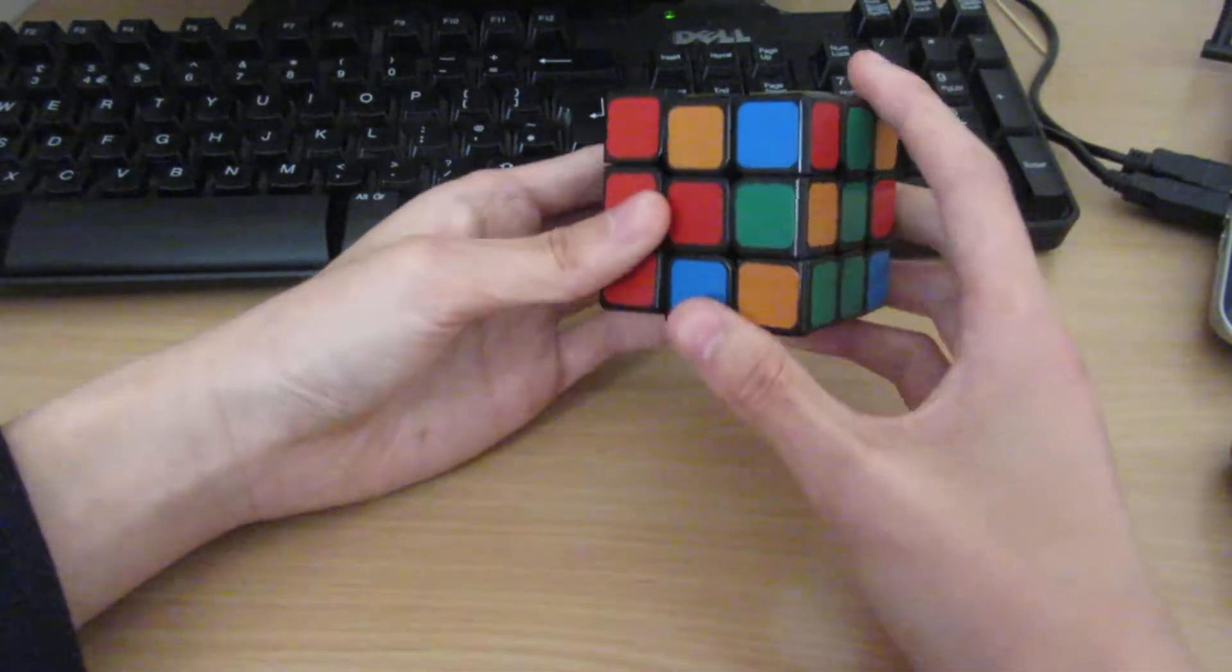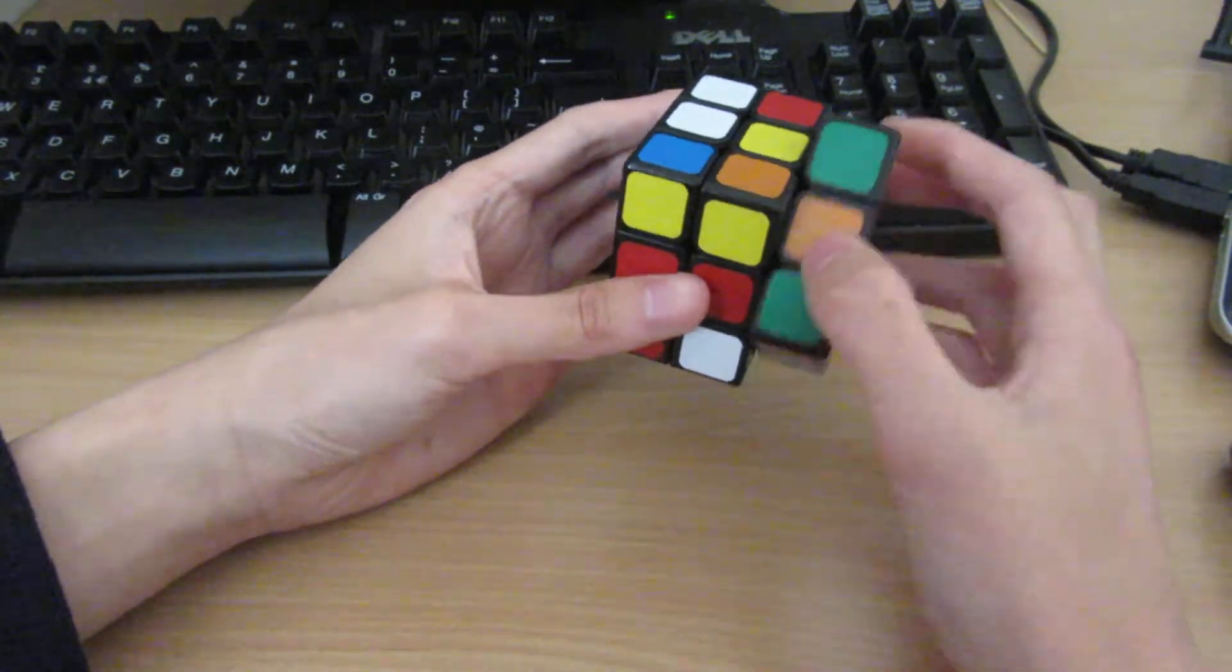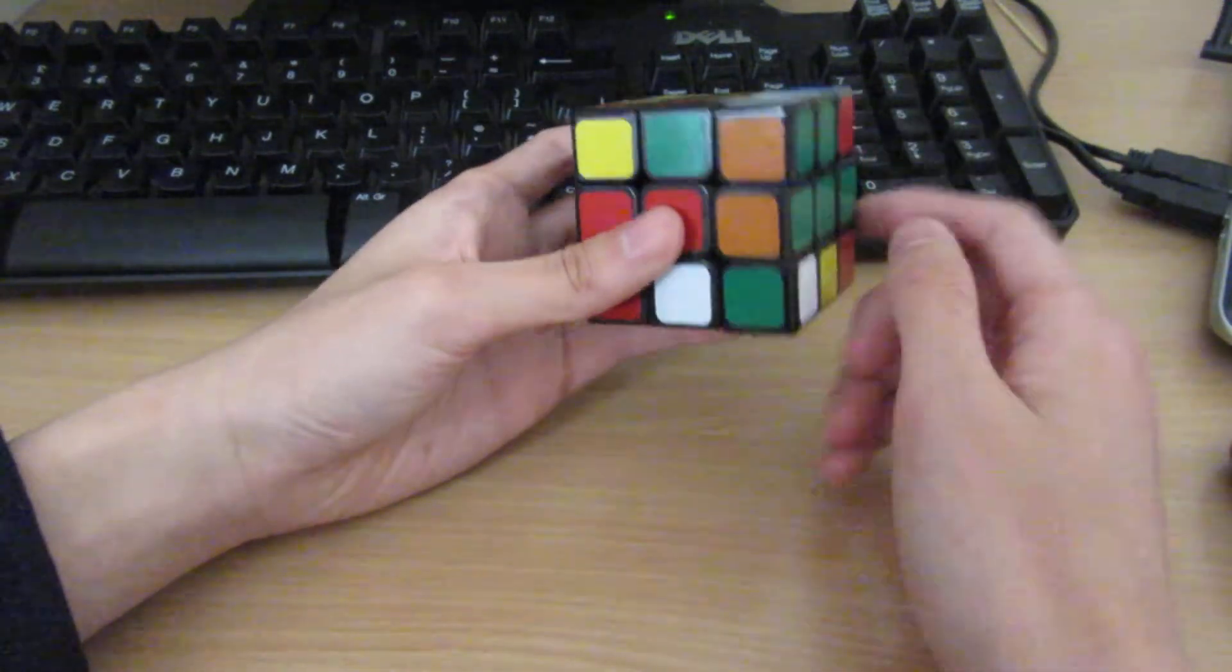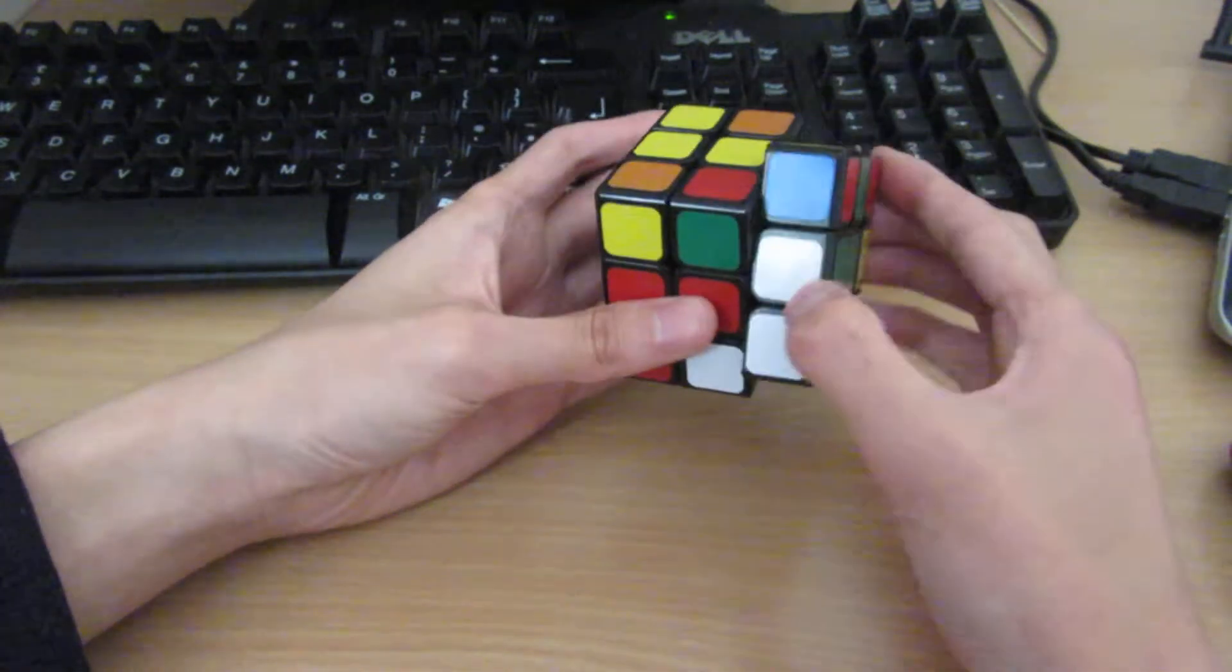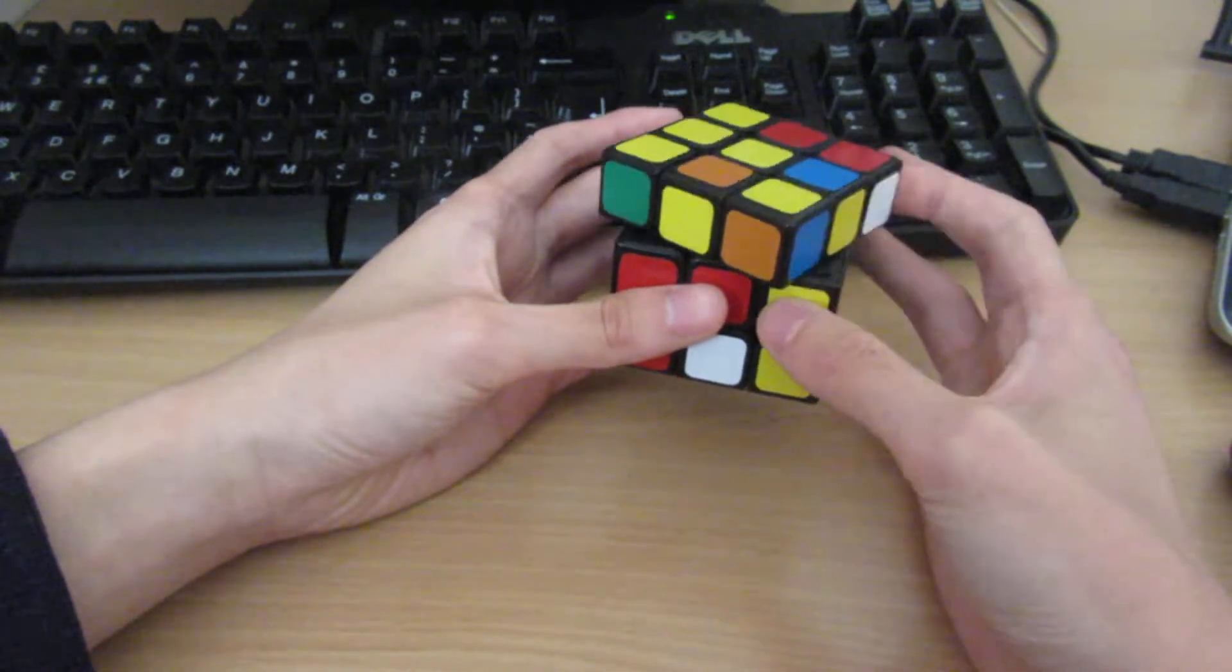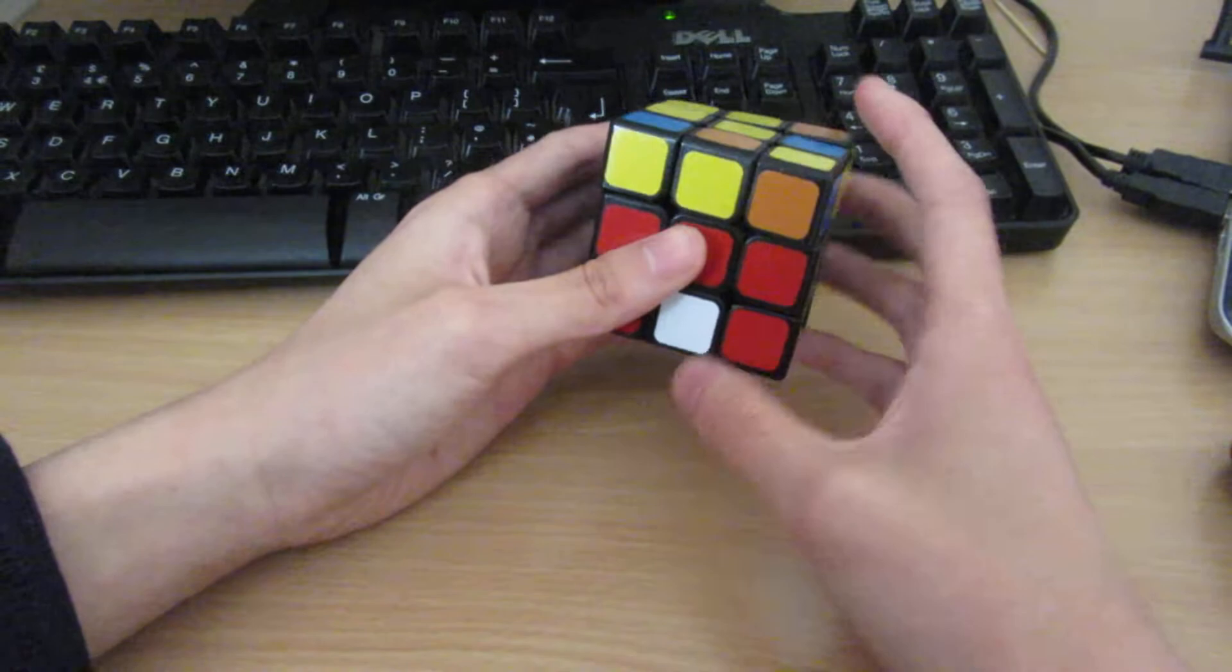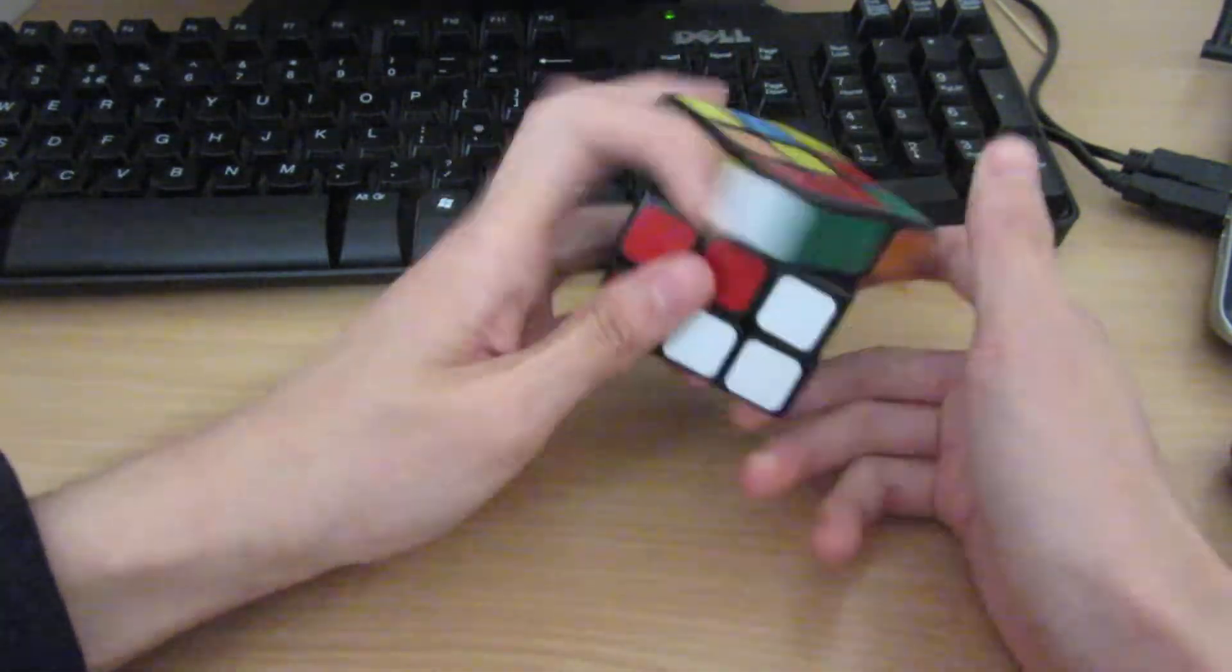This one, I just first orient it by doing this, and then join it up. These two will pair up, so I do it this way. Basically cancel into it. And then insert.